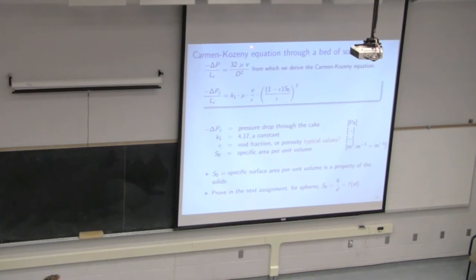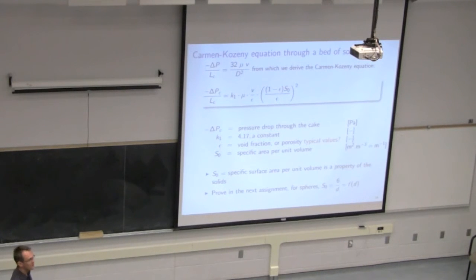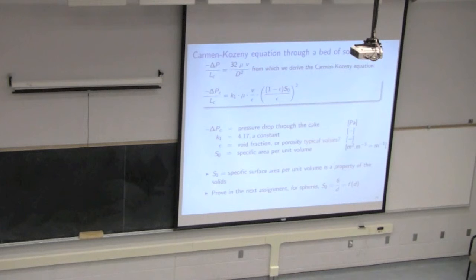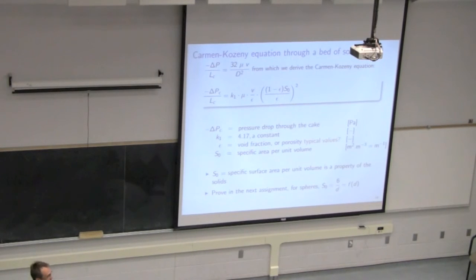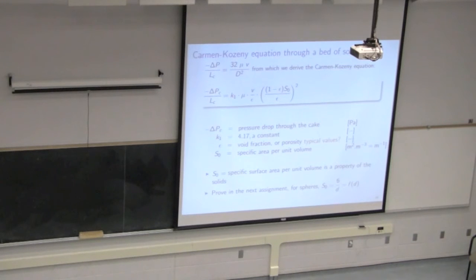Let's start from the Hagen-Poiseuille law, and do a simple substitution of term for term in the context of fluid flow through a packed bed. The first equation applies to flow through a straight tube of length LC. Through a packed bed, the length, velocity, and resistance experienced by the fluid all need to be modified. That equivalence gives us the second equation, called the Carman-Kozeny equation.